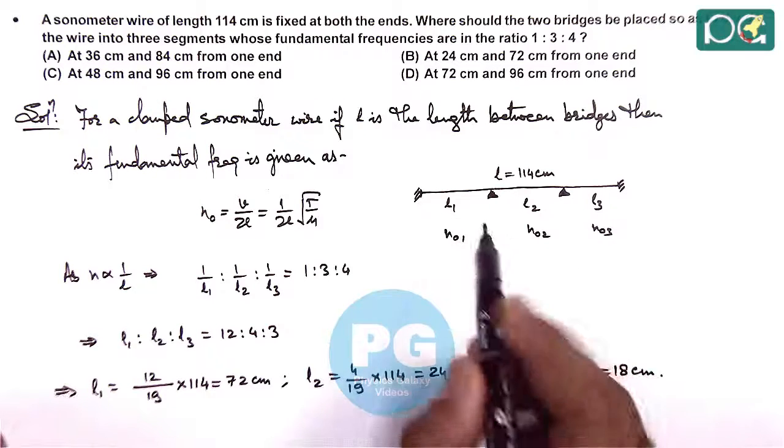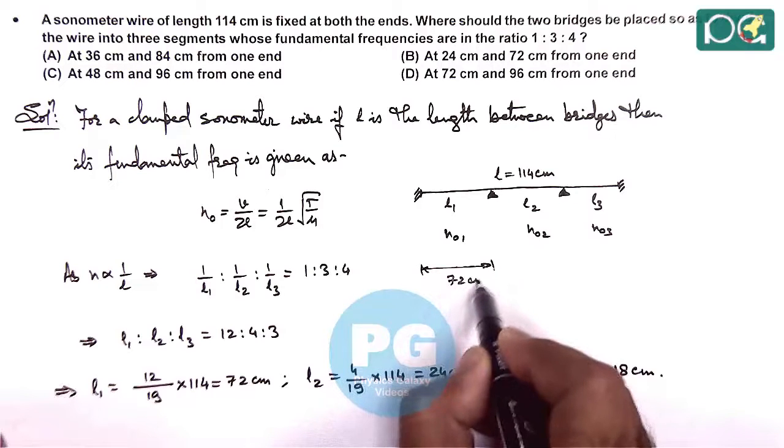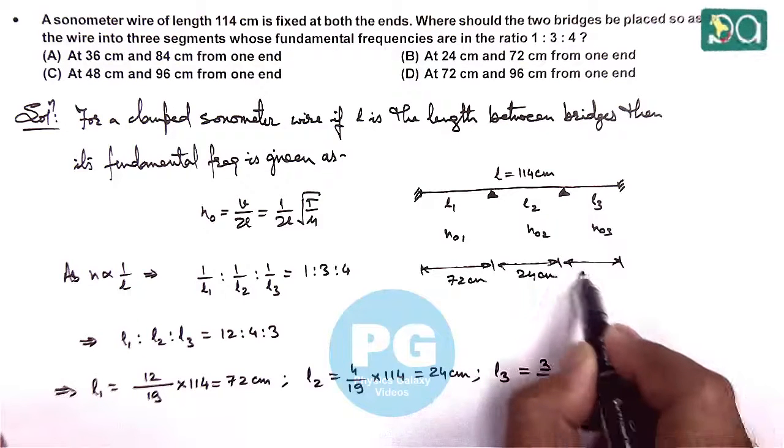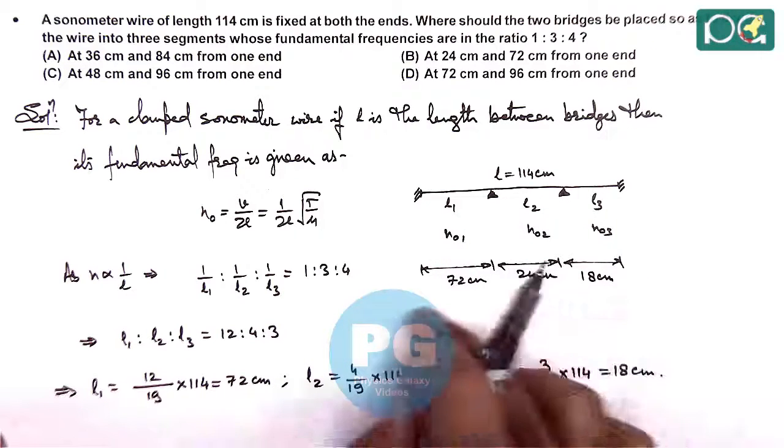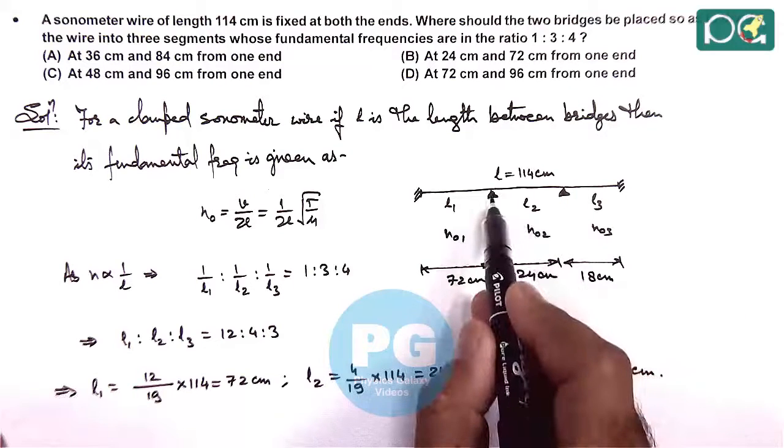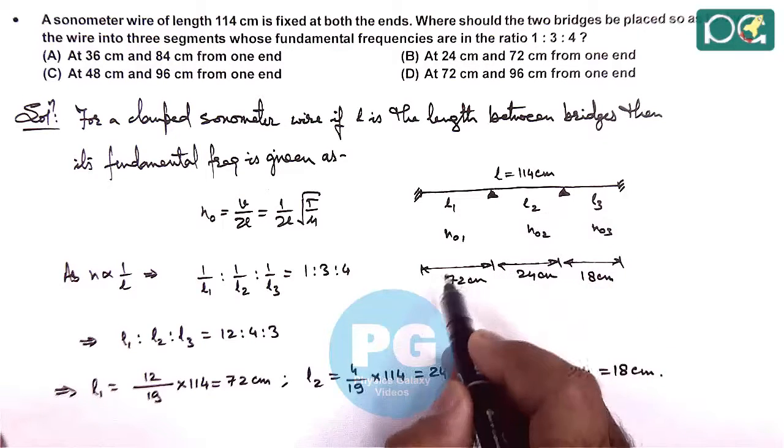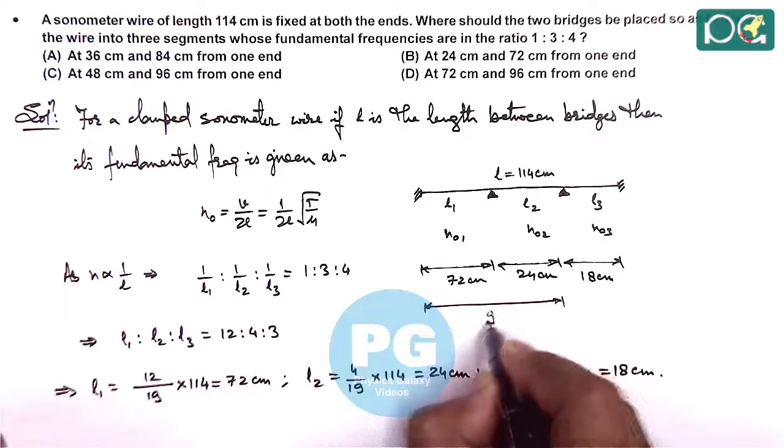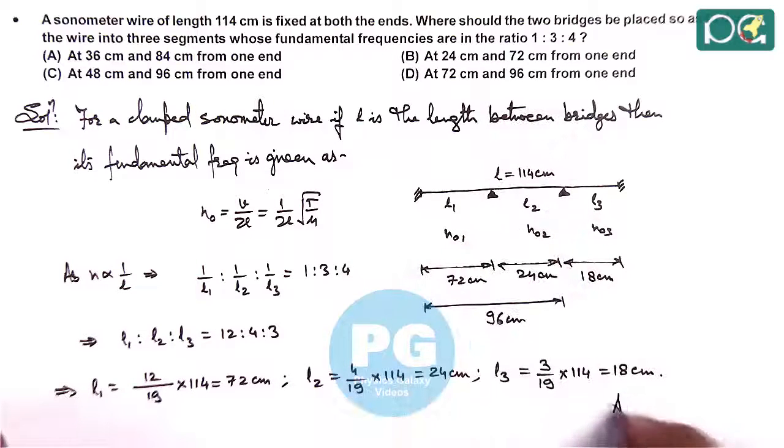The lengths we are getting are 72 centimeters, then 24 centimeters, and the third length is 18 centimeters. We need to check where the bridges are placed. One bridge is placed at 72 centimeters from one end, and the other is at 72 plus 24, which is 96 centimeters from this end. Out of the given options, you can see option D is correct. The answer to this question is option D.